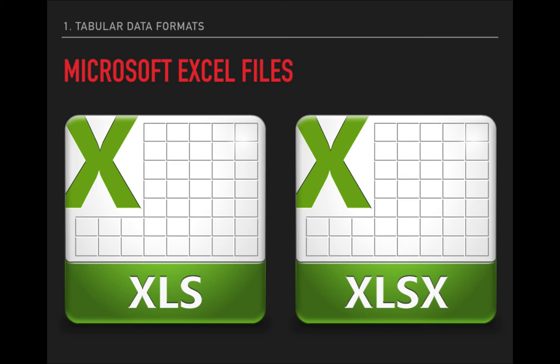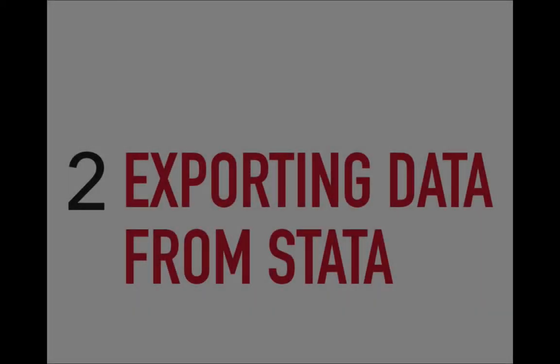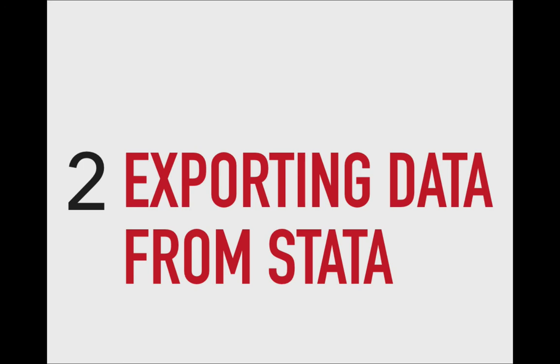The XLS files are the older Microsoft Office spreadsheet format — they've been around since the mid-1990s and were replaced a few years ago with the more modern XLSX format. The main difference for our purposes is that you can store over a million rows of data in an XLSX file, versus only about 65,000 rows in an XLS file. So depending on the size of the data you're working with, you may want to make a decision about your export format based on the number of rows. Stata gives us the option to export data in both formats.